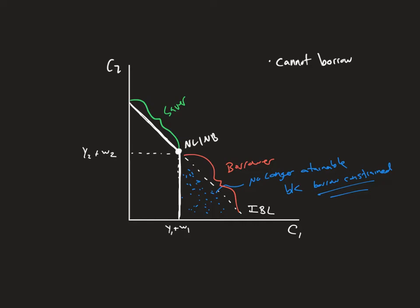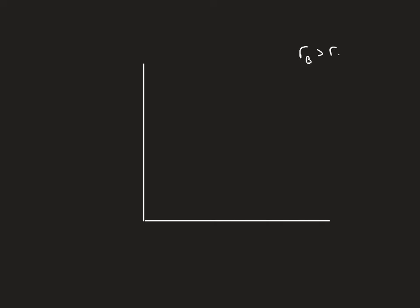Now let's look at a more realistic example, because usually people can borrow against future income — they just might have to pay a higher interest rate. So let's look at this exact same idea, but instead what we're going to have is an interest rate that you borrow at greater than the interest rate that you save at. We have our two-period model C1 and C2. Let's arbitrarily pick a no lending, no borrowing point. It's very important to understand that this point is Y2 plus W2, and this is Y1 plus W1. So we have this no lending, no borrowing point, but we see that our borrowing rate is greater than our saving rate.